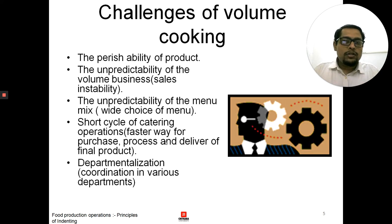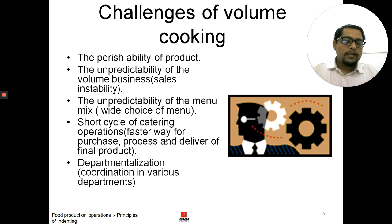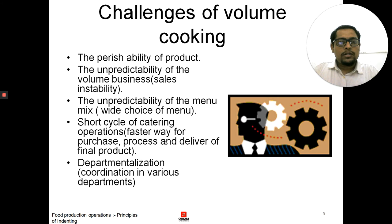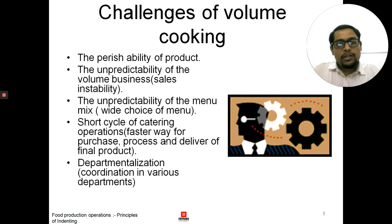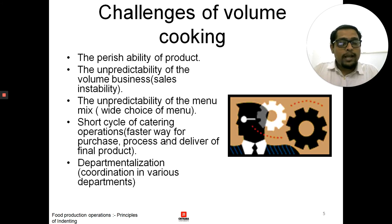Next is departmentalization, which is a big challenge for volume cooking. There is a need for coordination among different departments. Whenever a function is organized in a hotel, a copy of the function prospectus is delivered to each and every department — front office, housekeeping, service, kitchen, maintenance. All departments know what kind of function is happening, in which banquet, the number of guests, and their duties during the function. This is a challenge because there are many departments and multiple functions happening in a single day, so keeping an eye on all of them is a big challenge.